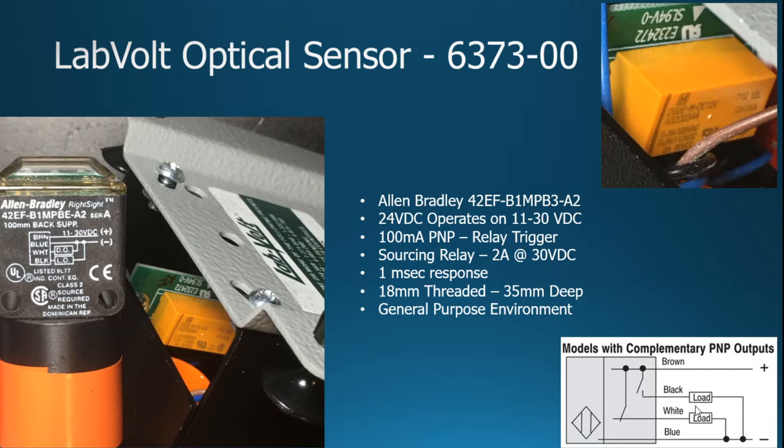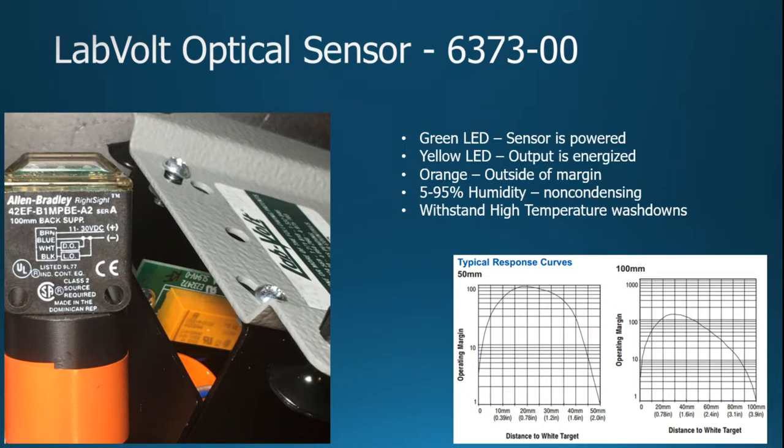Now, as far as on the backside of the sensor, we'll see here in just a moment. The sensor is a threaded 18 millimeter thread, 35 millimeter deep, and the idea is that you could put that into some type of surface that would be detecting something in front of it. It's a general purpose sensor. It can actually work in environments from 5 to 95 percent humidity, non-condensing. Obviously, if it condenses, it would fog up that sensor.